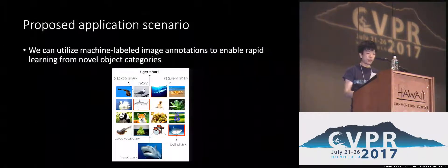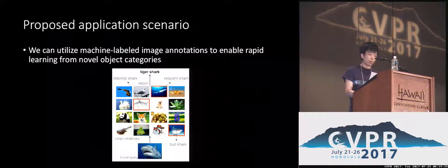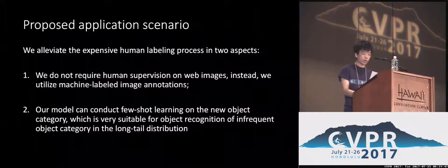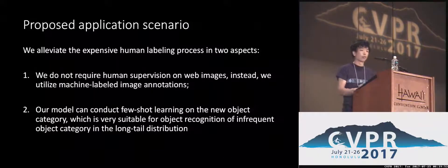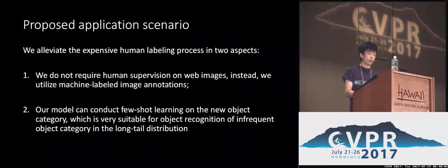In this work, we introduce a new paradigm to utilize abundant web images to recognize novel object categories with only a few examples. Building upon the large vocabulary provided by the web images, our model enables few-shot learning for object recognition. We alleviate the expensive human labeling process in two aspects. First, we do not require human supervision on web images — instead, we utilize machine label image annotations. Second, our model can conduct few-shot learning on new object categories, which is very suitable for object recognition of infrequent object categories in the long-tail distribution.